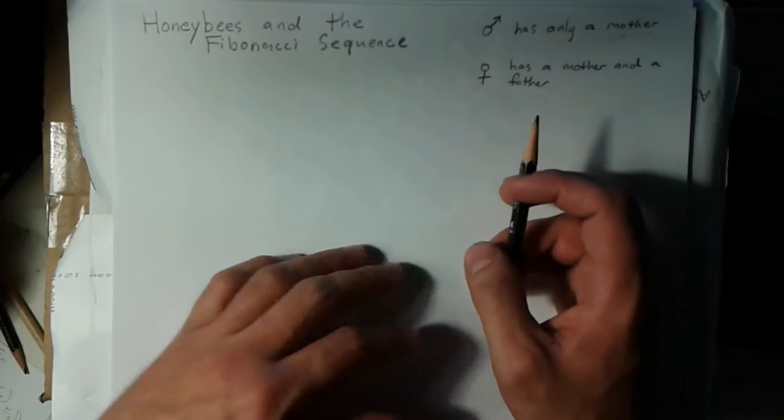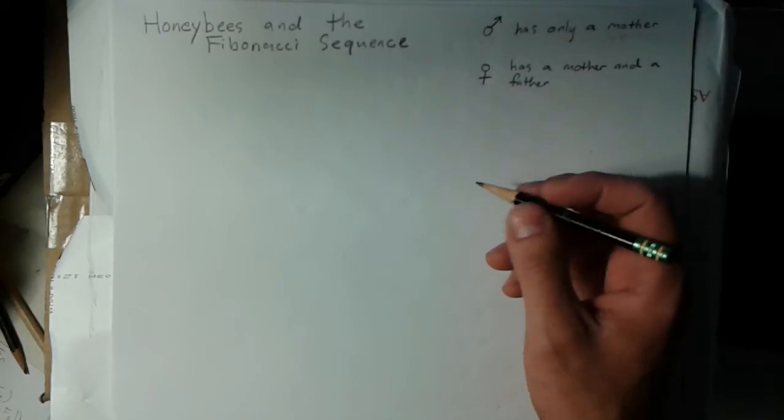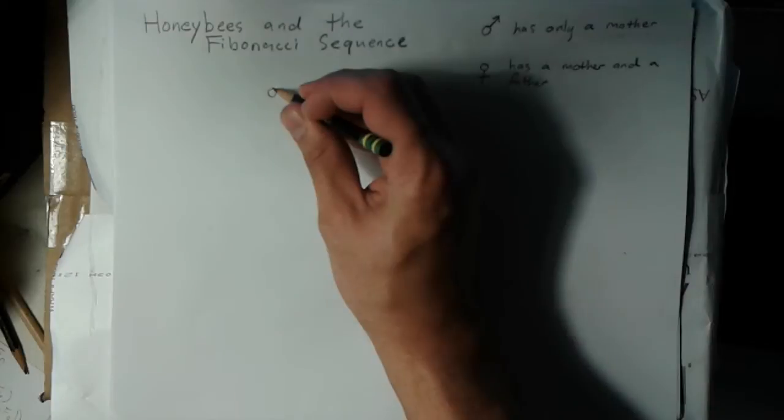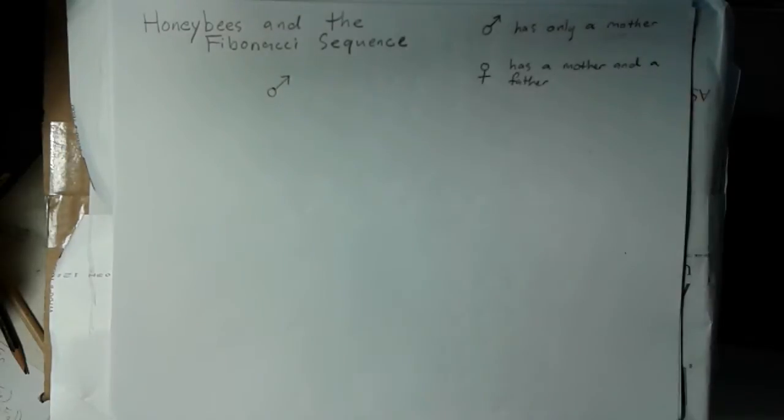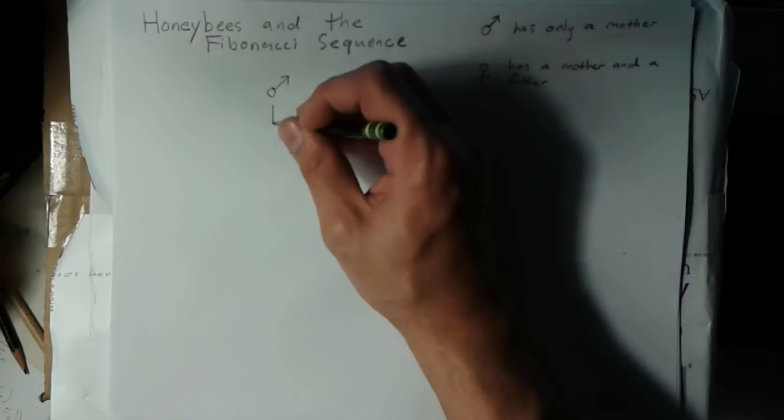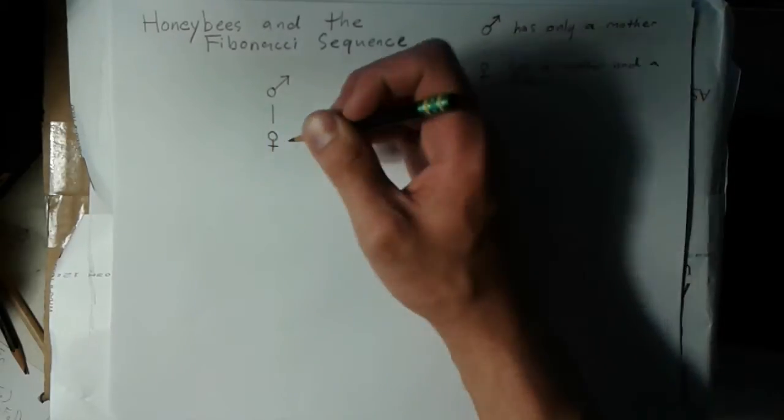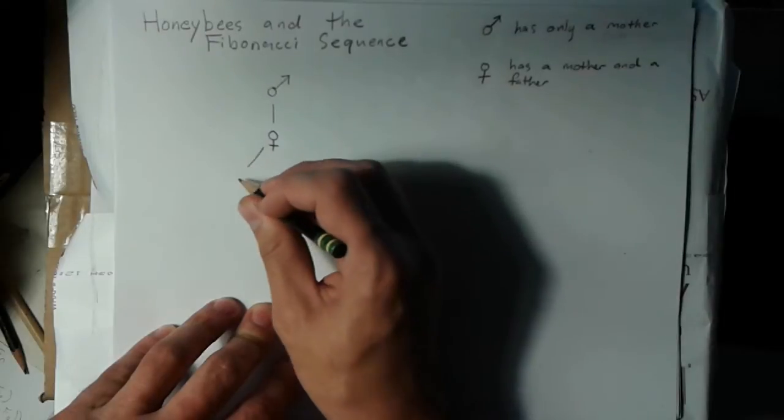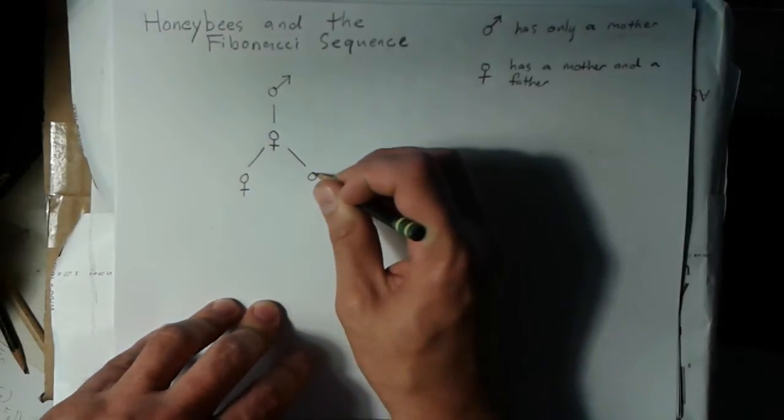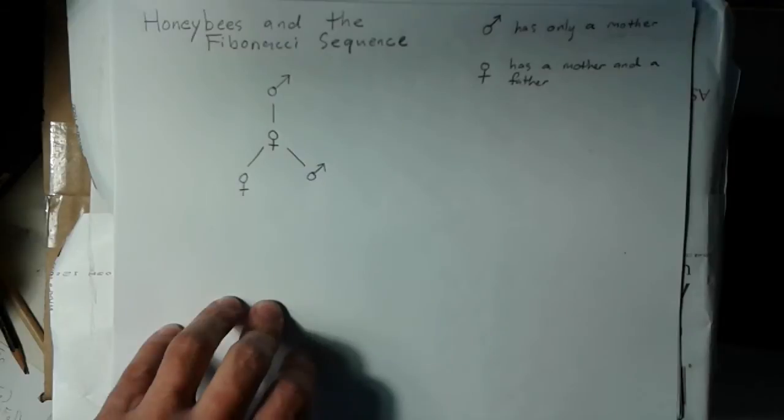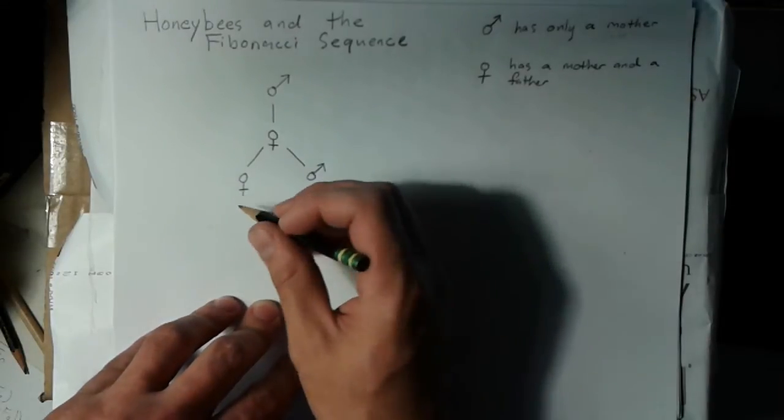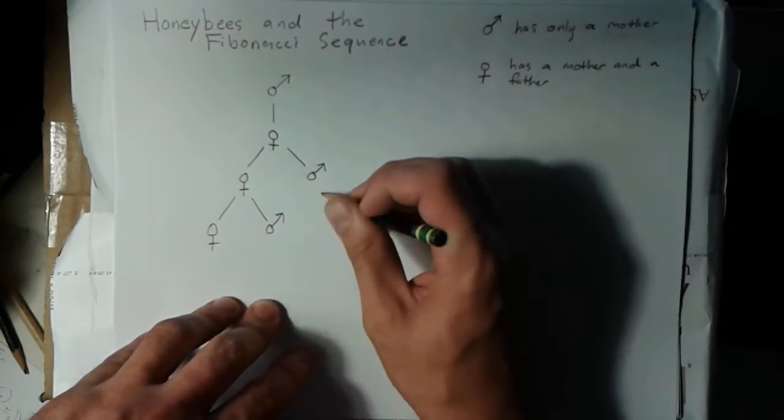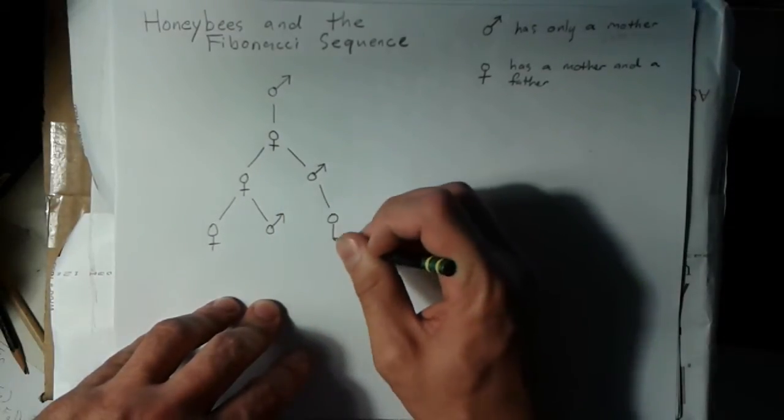If we look at these two basic rules, something kind of cool happens. If you just look at a single drone and you look at his family lineage, he had a mother who is a queen, and this queen had a mother and a father, and this queen over here had a mother and a father.